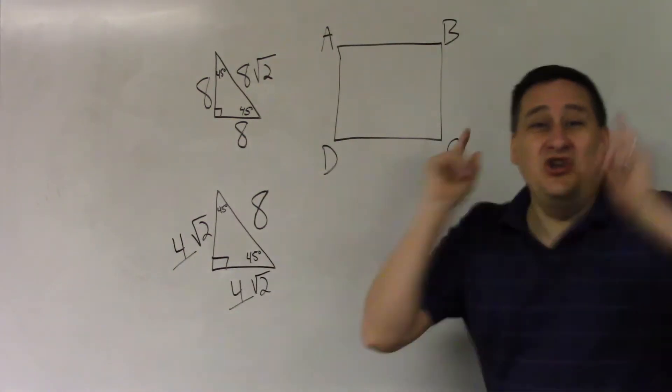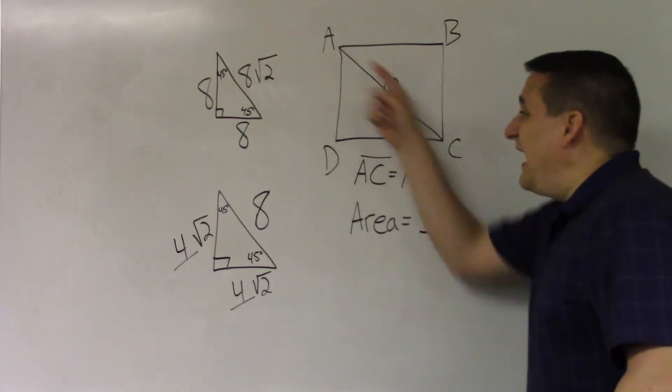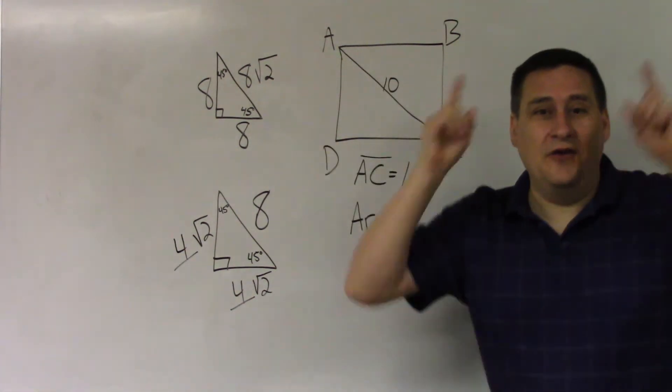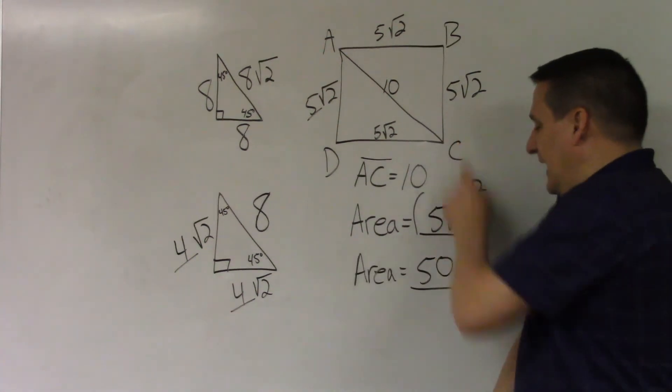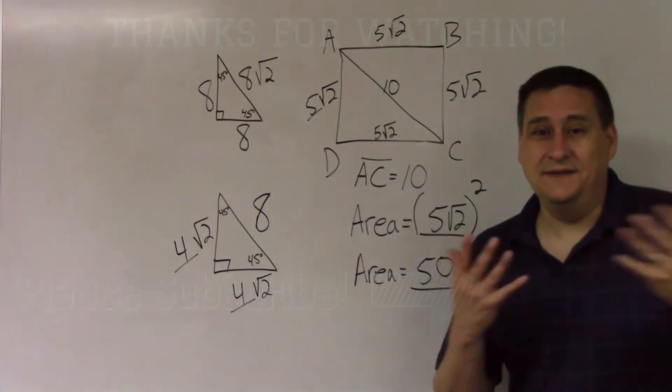So what do you see here? A square? No, it's two 45s. So if the hypotenuse is 10, what are the sides? Right. Half the hypotenuse times root 2. And what's the area of the square? The side squared. Or 50. Easy peasy.